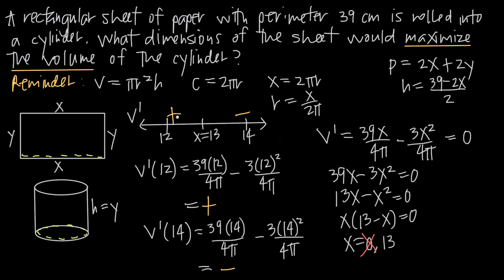When the derivative is positive, the original function is increasing; when negative, the function is decreasing. So the volume function increases to the left of x = 13 and decreases to the right. By the first derivative test, x = 13 represents a maximum — the function comes up, switches direction at x = 13, and goes back down, so x = 13 is the highest point.